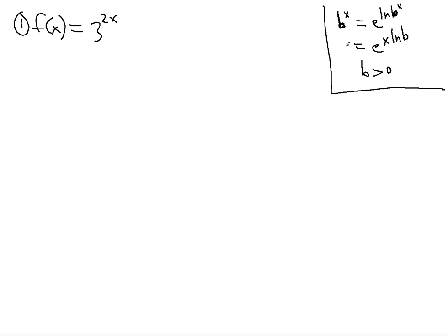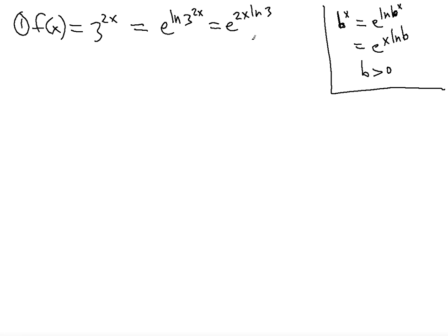Notice that this can be written using that identity — the b in this case is 3 — so it can be written as e to the ln 3, to the 2x, which equals e to the 2x ln 3. In this case, 2x is substituted for x, so we can write this in the form e to the ln 3 times 2x, where ln 3 is the constant.